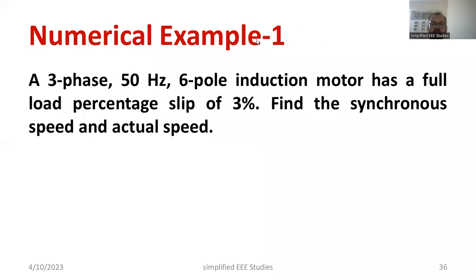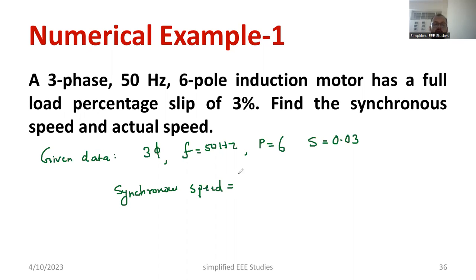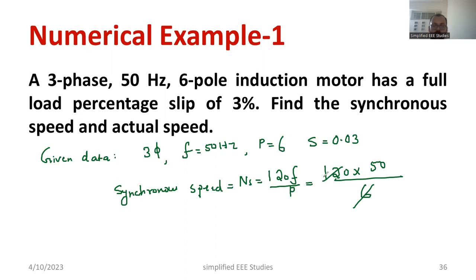Let us solve some numerical examples. Given data: a 3-phase induction motor, supply frequency F = 50 Hz, number of poles P = 6, and full load percentage slip = 3%, which is 0.03. Find the synchronous speed and the actual speed. First, calculate synchronous speed: NS = 120 × F / P = 120 × 50 / 6 = 1000 RPM.